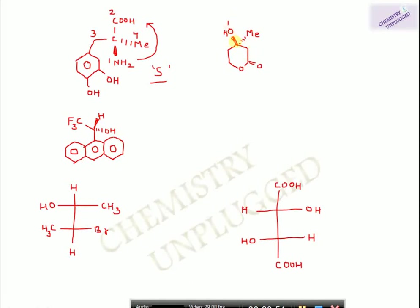In the next example, the chiral carbon is attached with OH, CH3, and two different carbon chains. We give OH priority 1. Among the carbon groups, the one attached with a carbon bearing a double-bond oxygen gets priority 2, the next carbon-containing group gets priority 3, and methyl gets priority 4. The lowest priority group is on the back side, so we directly determine — the sequence is clockwise, giving R configuration.